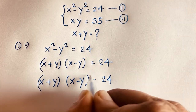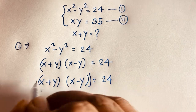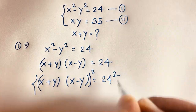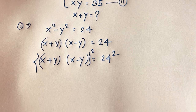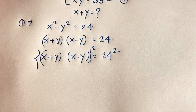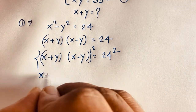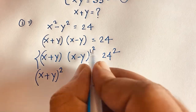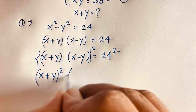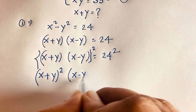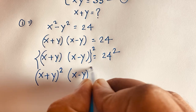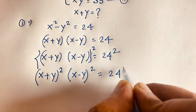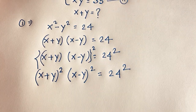Then I use both sides squared. This expression becomes (x plus y) whole squared times (x minus y) whole squared is equal to 24 squared.